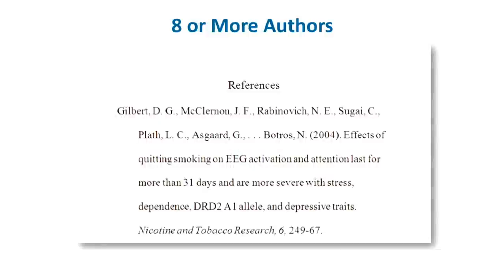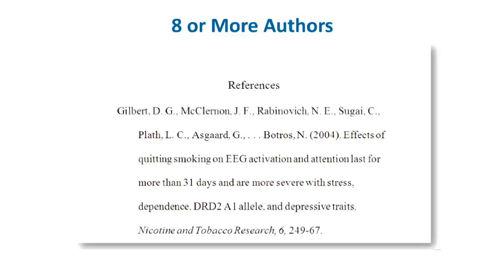But if you have eight or more authors, you only write out the names of the first six authors. Then insert an ellipsis after the name of the sixth author — an ellipsis is three dots. Then list the last author.